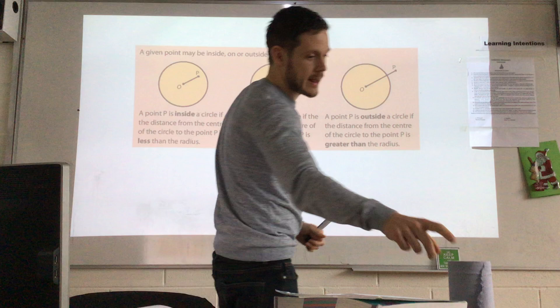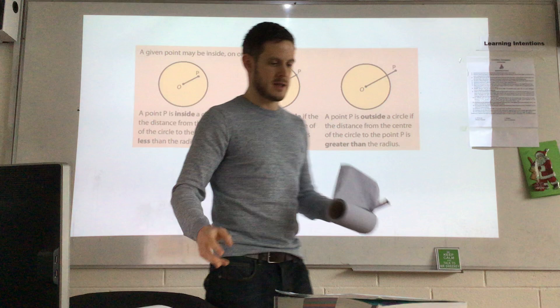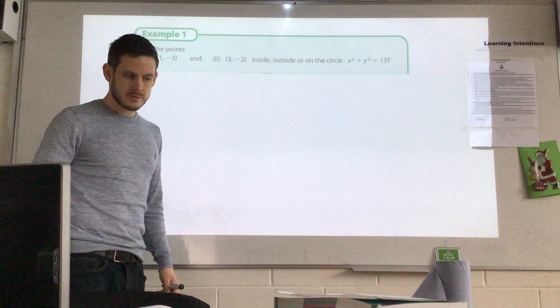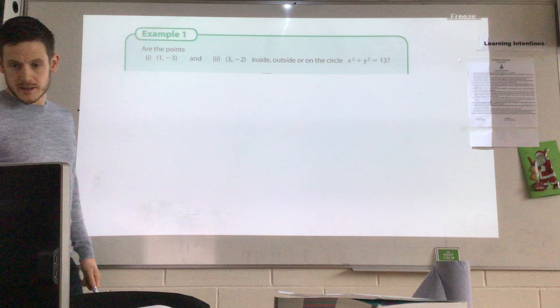So there are three situations we can have, and we're going to look at how we would prove this — a very common question when it comes to the circle. In some form or another, you'll get a question that says: is this point inside, outside, or on this circle? There are two different methods, and here is the first one. We've got two points and it's asking us whether they are inside, outside, or on this circle, and it gives us the equation of the circle.